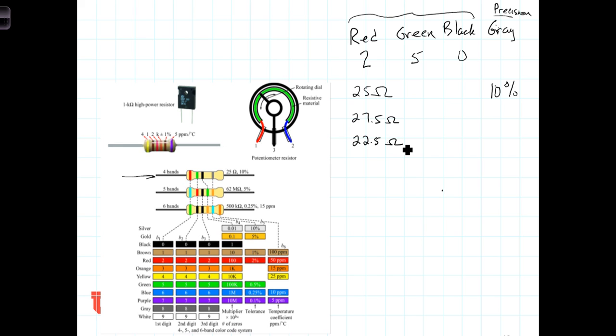By a 10% resistor, it's guaranteed to be within 10% of the nominal value represented by the numbers. Let's do another example.